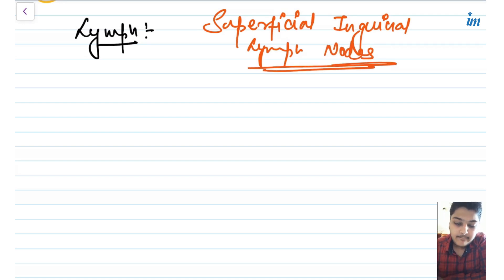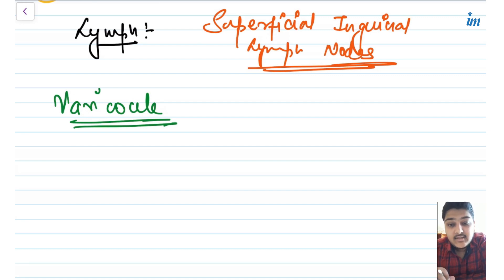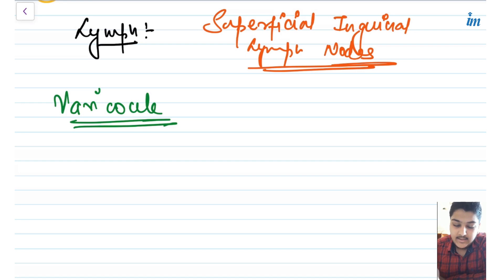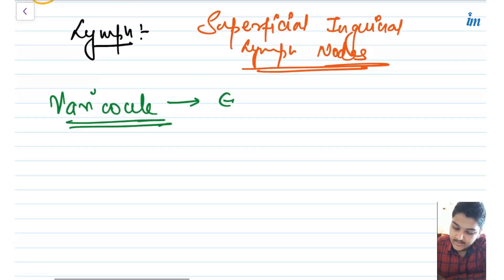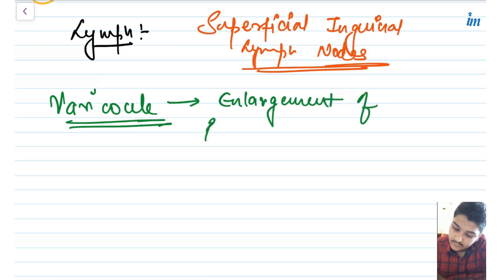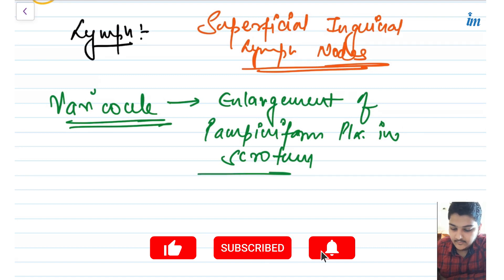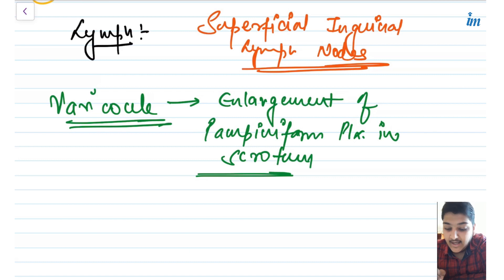One important clinical correlation is varicocele. Varicocele is the enlargement of the pampiniform plexus — the plexus made up of testicular veins discussed in the previous video. When this pampiniform plexus enlarges in the scrotum, that condition is known as varicocele. It is very similar to varicose veins, just located in the scrotum.